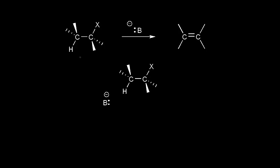In an E2 mechanism, we need an alkyl halide and we need a strong base. On our alkyl halide, the carbon that's directly bonded to the halogen is the alpha carbon, and the carbon next to the alpha carbon is the beta carbon. And we need a beta hydrogen for this reaction to occur.